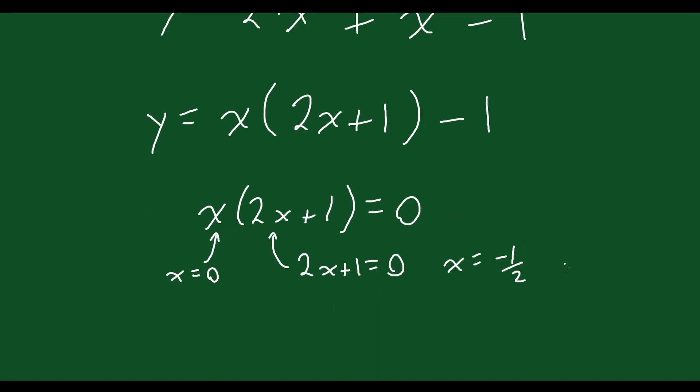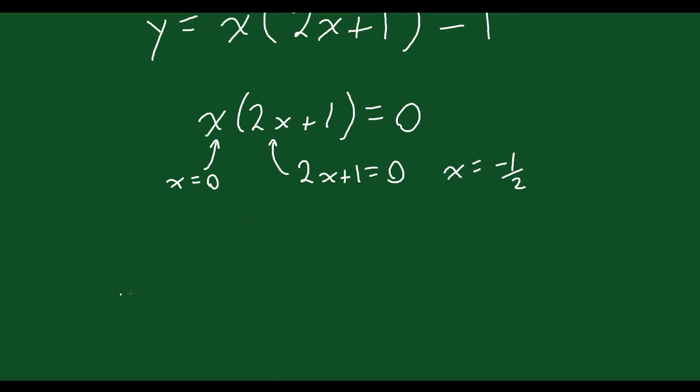So that means we have two points here. We have the point 0, negative 1, and you also have the point negative 1 half, negative 1, right? Because when you plug in either of those x values, that first part becomes 0, and you're left with negative 1. So we have two points.